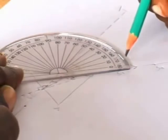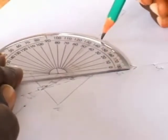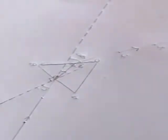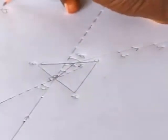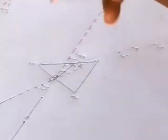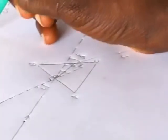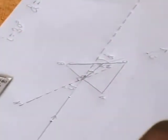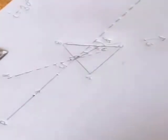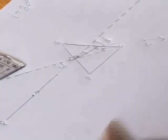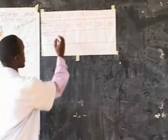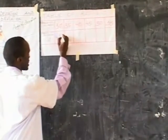Measure the angle of deviation. The angle of deviation is equal to 49 degrees, while the angle of incidence used was 30 degrees. Record the observations in the table: angle of incidence 30 degrees, angle of deviation 49 degrees.